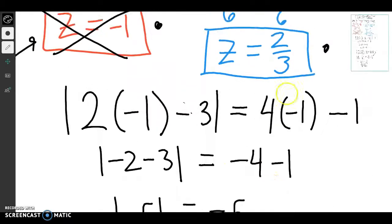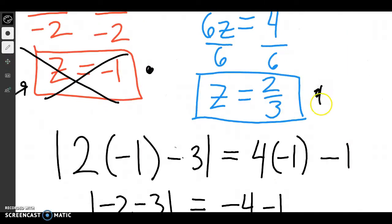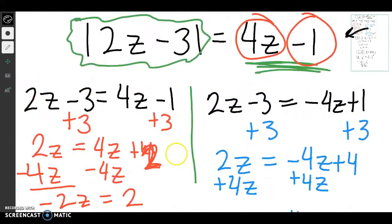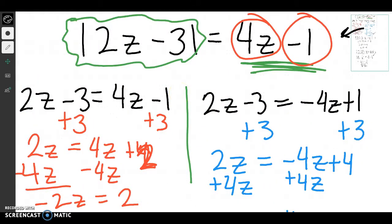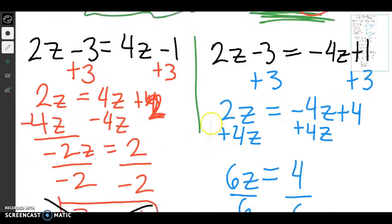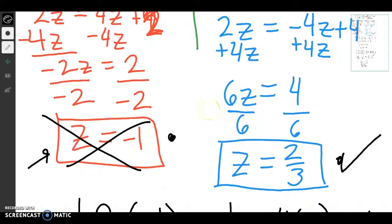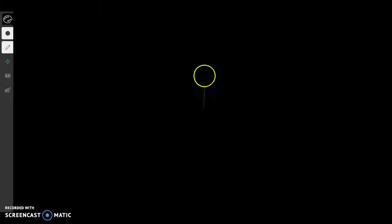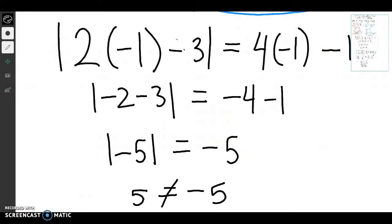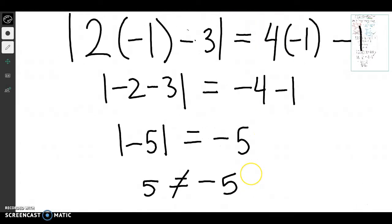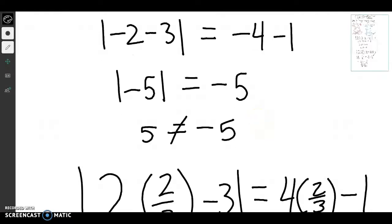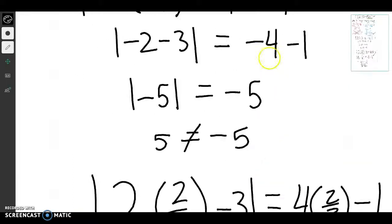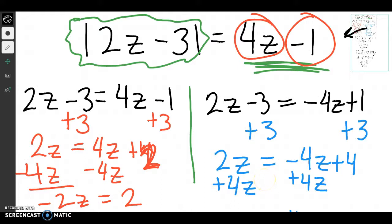So if I go back up here, I would say that this 2 thirds is a correct answer because when we plugged it in, everything worked out. So that's how you solve absolute values with an expression on a side. You first break it up like we did yesterday. You solve the problem. You'll end up getting 2 answers. After you get 2 answers, you need to plug them in to check if they're the correct answer. And we can see that that negative 1 produced a bad solution. But when I put in the 2 thirds, it produced a good solution. So try some of these problems and see if you can get how many answers you get for each. Thank you so much!